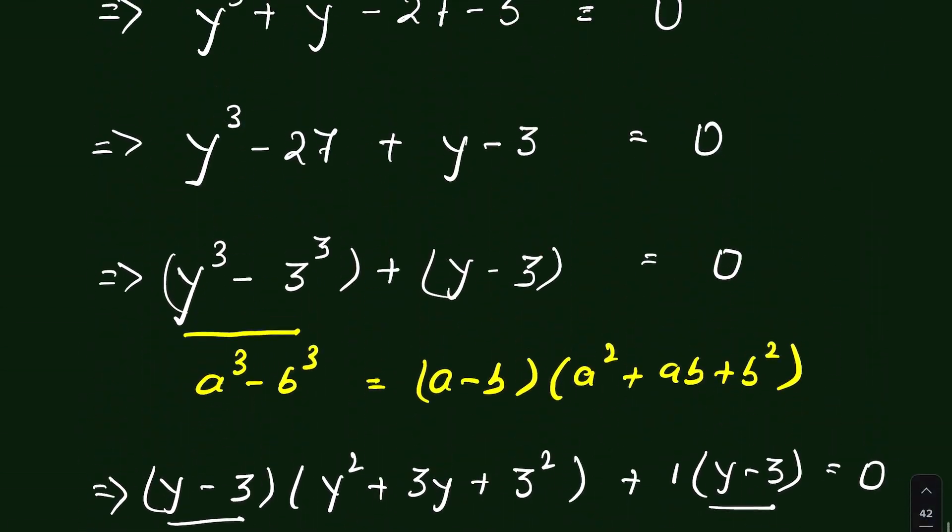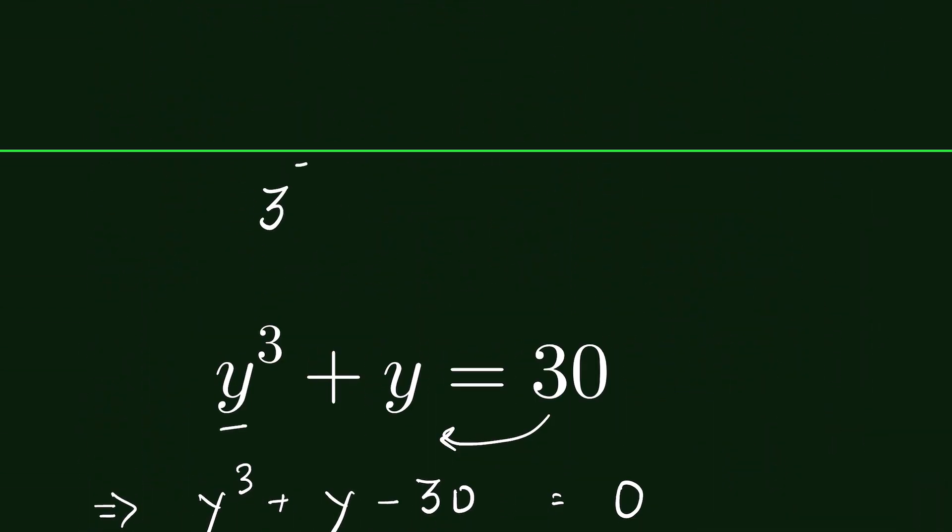Let's verify this answer. y is 3, so 3 cube plus 3, 3 cube is 27 plus 3 is equal to 30. Therefore, LHS is equal to RHS. Hence, y is equal to 3 is our answer.